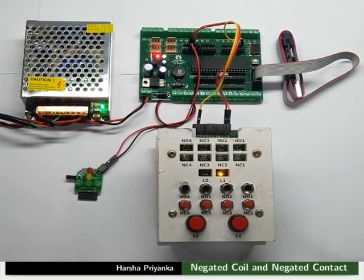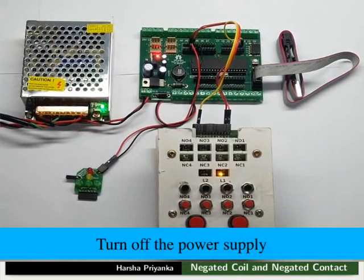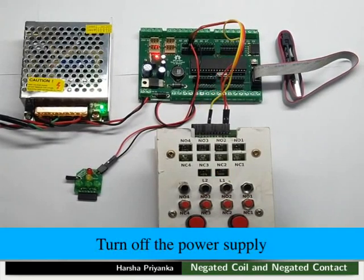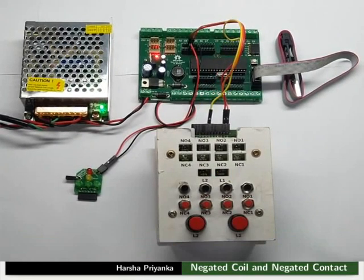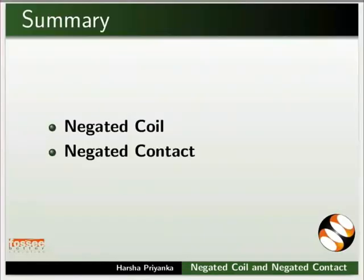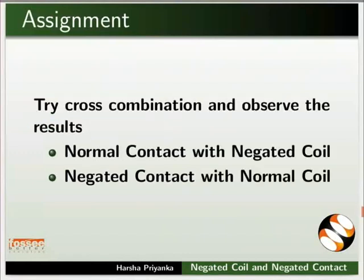This shows how a negated contact behaves with different types of switches. Turn off the power supply. This brings us to the end of this tutorial. In this tutorial, we learned about the working of negated coil and negated contact. As an assignment, try a cross combination and observe the results — that is, normal contact with the negated coil, and negated contact with the normal coil.